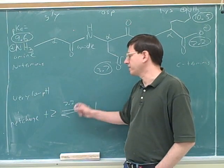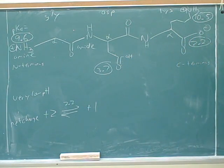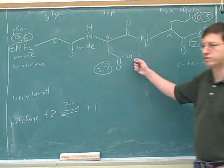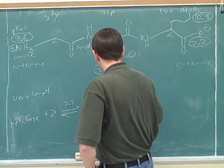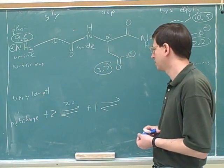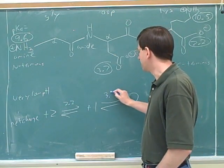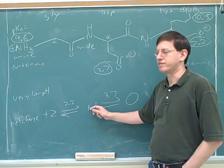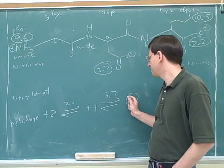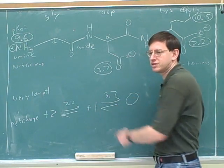Now we're going to imagine continuing to raise the pH. Well, if we continue to raise the pH, another of the functional groups is going to deprotonate. Who's going to be the next functional group to deprotonate? 3.7. This one over here will now deprotonate. And then the net charge would be zero. So that threshold was 3.7. If the pH is a little less than 3.7, this is the major form. If the pH is greater than 3.7, this is the major form. And if the pH is exactly 3.7, we have about equal amounts of these.